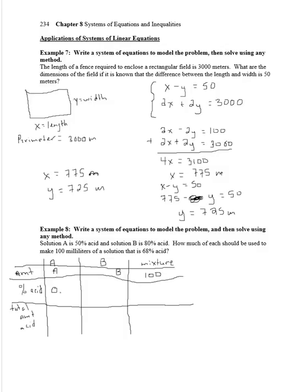Now, solution A is 50% acid, which is 0.5. Solution B is 80% acid, which is 0.8. And we want our final to be 0.68% acid, which is 0.68. So the total amount of acid is going to be 0.5 times the amount of solution A. B is going to be 0.8 times the amount of solution B. And our mixture is going to be 0.68 times 100. So that gives us two equations. We have A plus B equals 100. And we have 0.5A plus 0.8B equals 68.